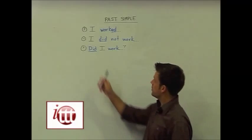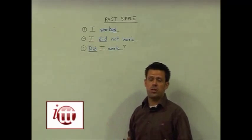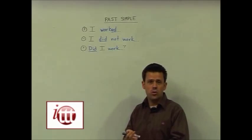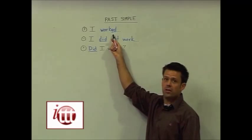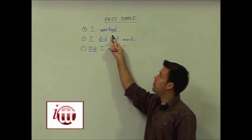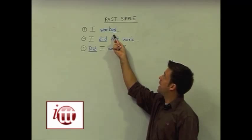To make positive sentences, we have our subject, and the subject can be anything from I, you, we, they, it, he, she. And now we conjugate or change our verb most often by adding ed.